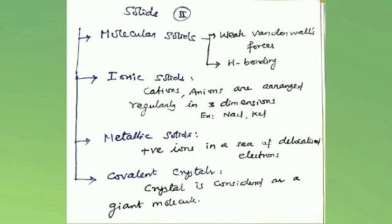In ionic solids, cations and anions are arranged regularly in three dimensions and are strongly held together by electrostatic attraction. These solids are rigid with high melting points, but they are brittle and non-elastic. As the ions are not free to move, ionic solids are electrical insulators in the solid state. Examples include sodium chloride, potassium chloride, etc. They are hard and brittle.